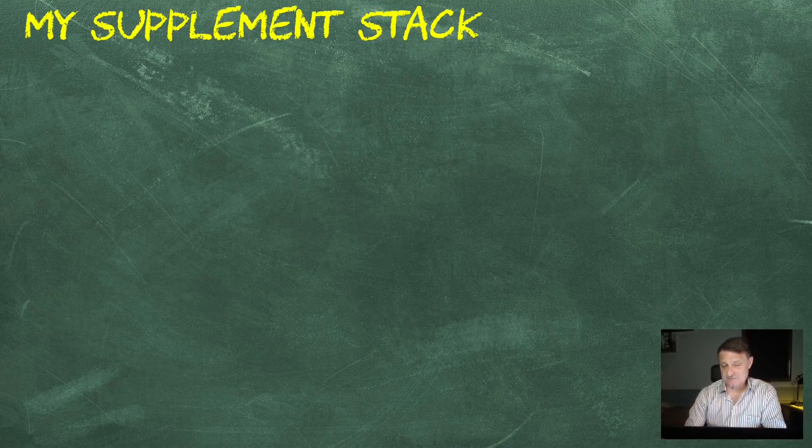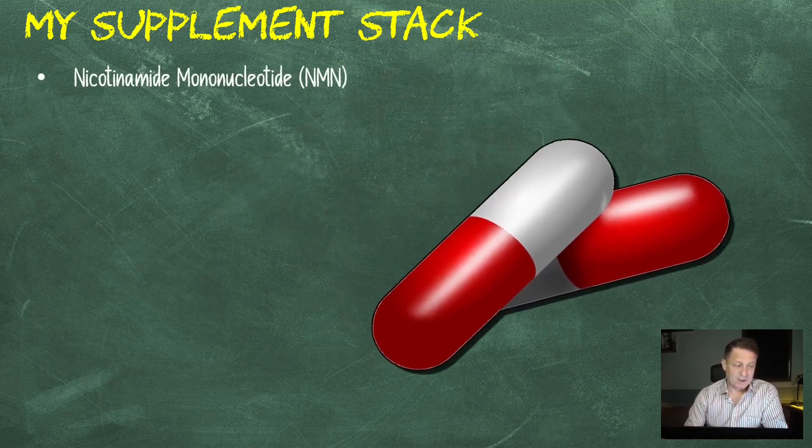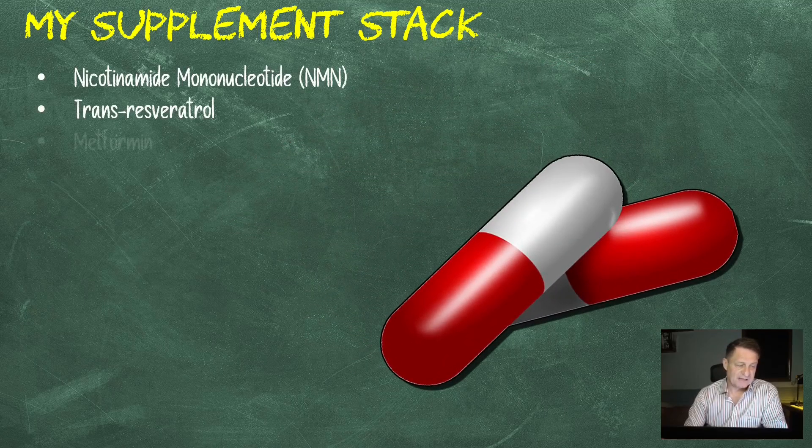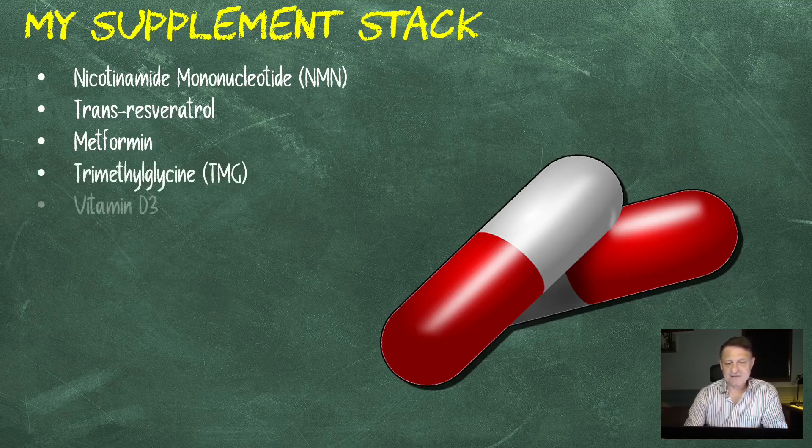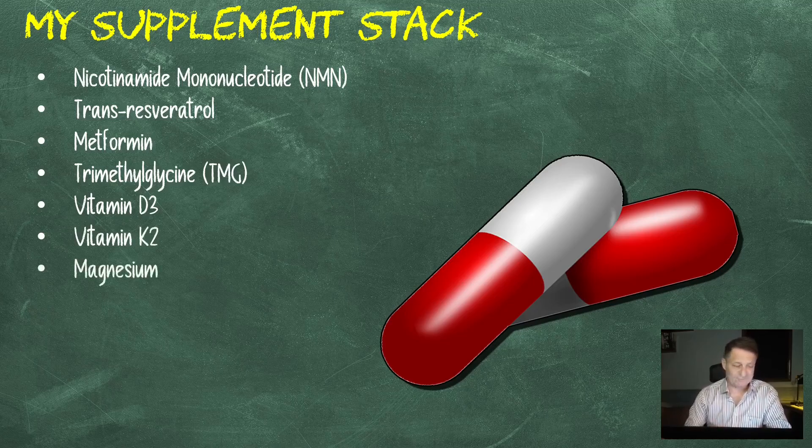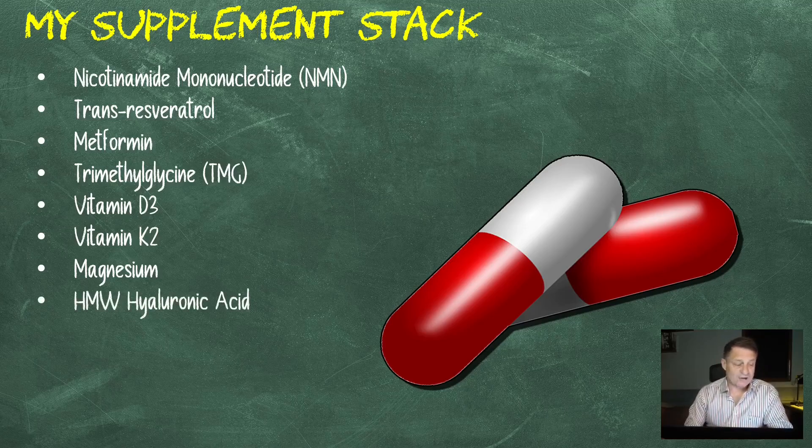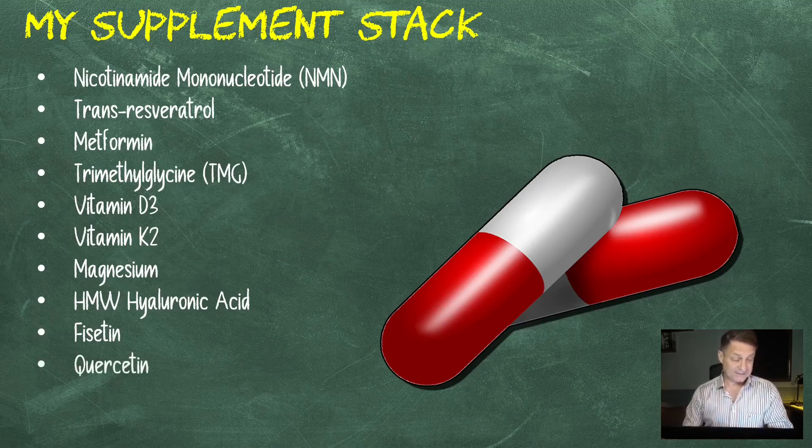Let's take a look at the supplements I was taking over the last four months. Stick with it because I've added something to my stack. 1.5 grams of NMN, nicotinamide mononucleotide. 1 gram of trans-resveratrol. 1,000 milligrams, 1 gram of metformin. 1.5 grams of TMG, trimethylglycine. 5,000 international units of vitamin D3. 120 micrograms of vitamin K2, that's the MK7 version. 250 milligrams of magnesium, L-threonate version. 400 milligrams of high molecular weight hyaluronic acid. 2.4 grams of fisetin, and I take that on the first, second, and third of each month. 2.4 grams of quercetin, and again, I only take that on the first, second, and third of each month. If you want to know why I do periodic dosing and not every day, there's a link in the description below to the periodic dosing video.